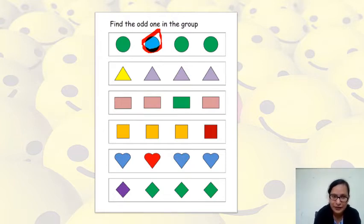Now we will move to our next one. You can see all the triangles. There are four triangles. You can count 1, 2, 3, and 4. But the first one is yellow in color and the others are purple. So we are going to circle the first one.